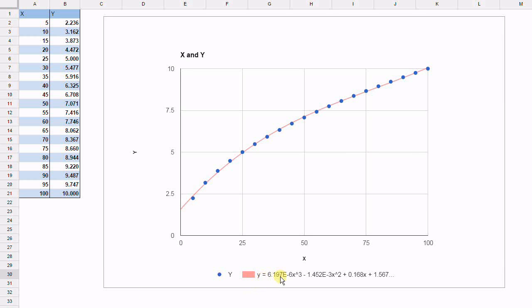So now here is the equation that will fit that line to the level that we see. A very small value, 6.19e to the minus 6, so a very small value of x values cubed, minus 1.452e to the minus 3, a small value of x squareds, plus 0.168x, plus 1.567 as a constant.